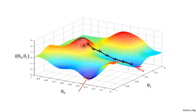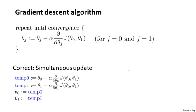So that's the intuition in pictures — let's look at the math. This is the definition of the gradient descent algorithm. We're going to repeatedly do this until convergence: we're going to update the parameter theta j by taking theta j and subtracting from it alpha times this derivative term. So let's see — there are a lot of details in this equation, so let me unpack some of it.